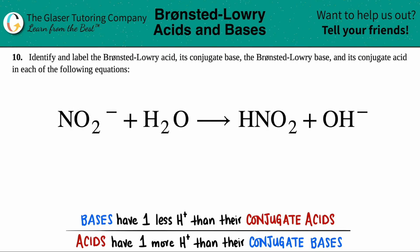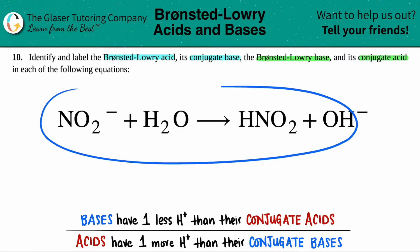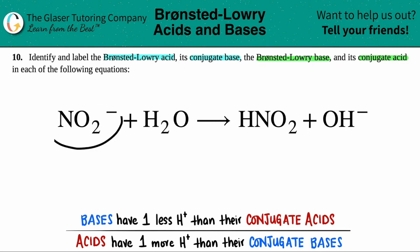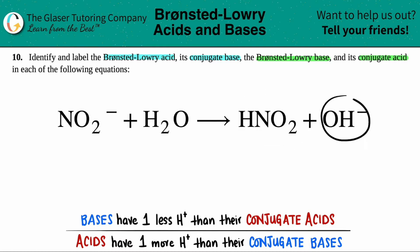Number 10. Identify and label the Bronsted-Lowry acid, its conjugate base, and the Bronsted-Lowry base, and its conjugate acid in each of the following equations. We have this equation right here: NO2 minus plus H2O yields HNO2 plus OH minus. We have to find out the four components — the Bronsted-Lowry acid and base, and the conjugate acid and base.